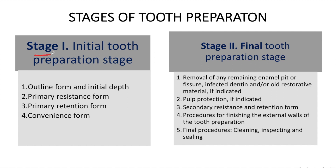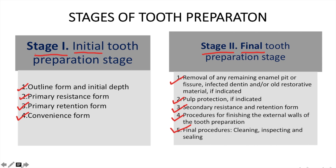Stage 1 is the initial cavity preparation stage, which involves the outline form, primary resistance form, primary retention form, and convenience form. Stage 2 is the final tooth preparation stage, which involves the removal of any remaining enamel, infected dentine, or restorative material if indicated. Then, we provide pulp protection if indicated. Then, secondary retention and resistance form. After this, we do the procedures for finishing the external walls of tooth preparation, and finally we clean and inspect the tooth preparation for restoration.